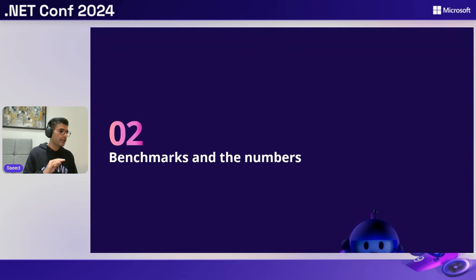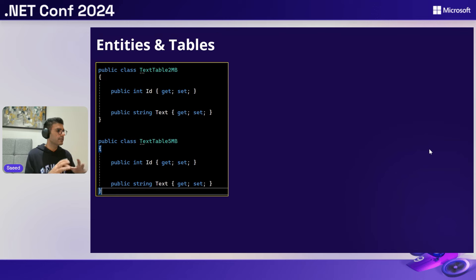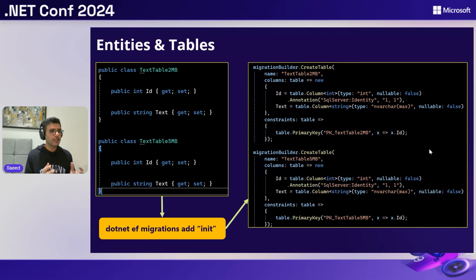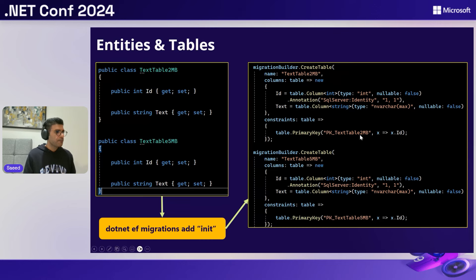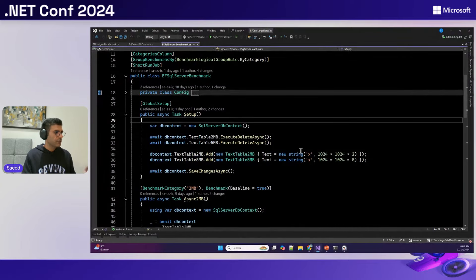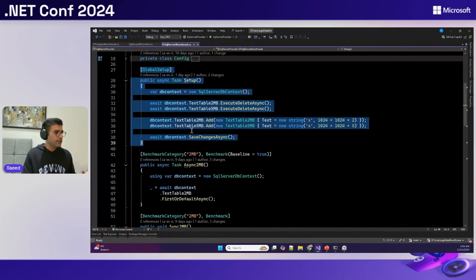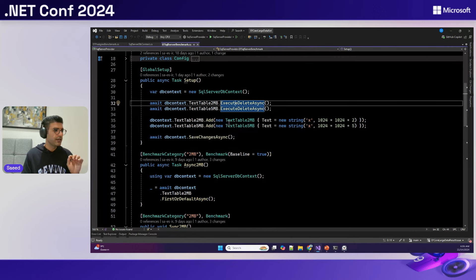Let's look at the benchmark results. I created two tables with two properties each: an ID as a primary key, and a text as a string which becomes nvarchar max. Running the EF Core migration without any length constraint defaults to nvarchar max. In the setup, I delete everything from my tables and then insert only one record.